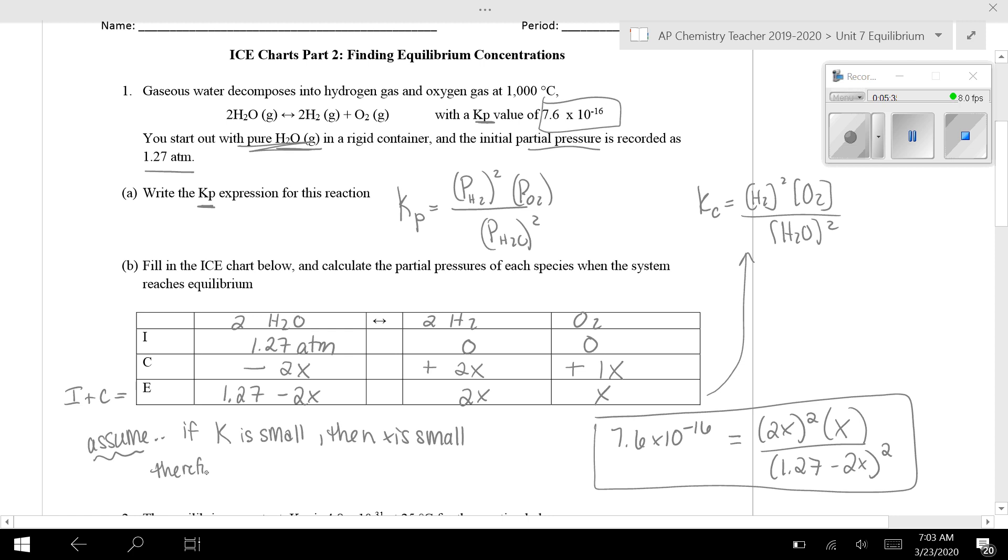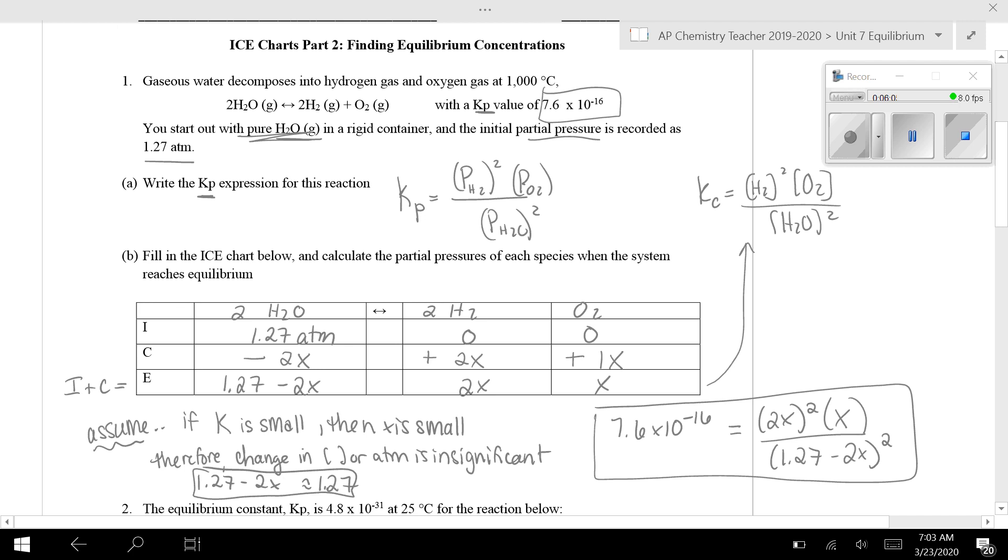Therefore, the change in the concentration or pressure is insignificant. And what does that mean? Well, what that means is 1.27 minus 2X is basically just 1.27. That change in 2X is going to be very insignificant, relative to my initial value right here.